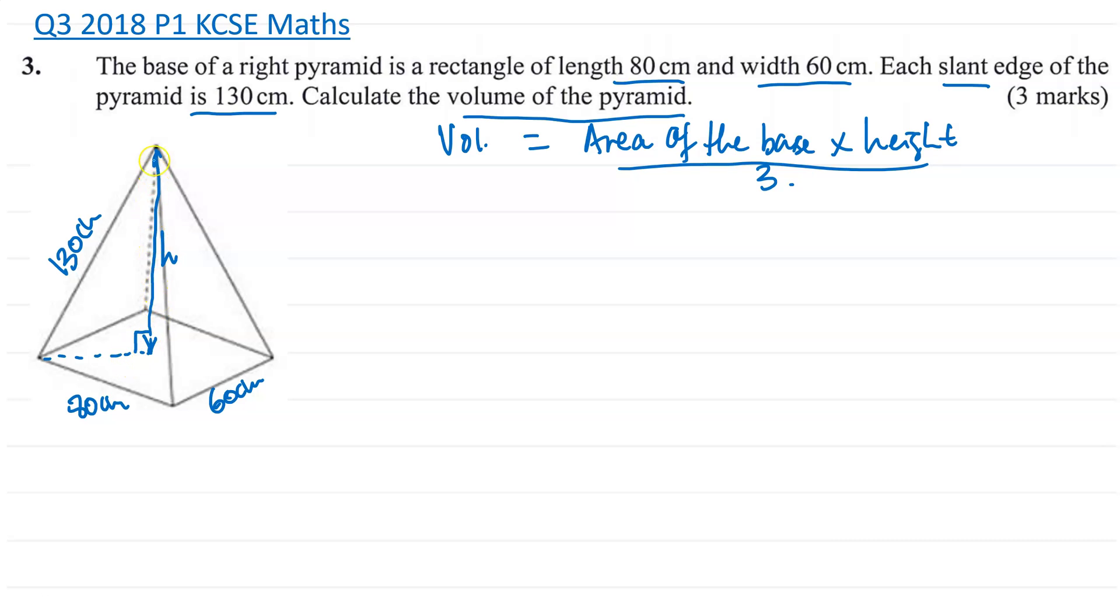I can use this right angle triangle to find my height. But the other problem I have is that I don't know this length. Now let me label this corner. So that's A, this is B, this is C, let's say this is D and this point here is E. So the problem that I have, I don't know what AE is.